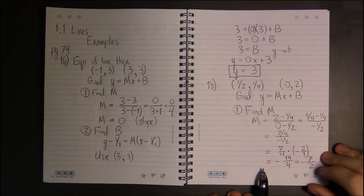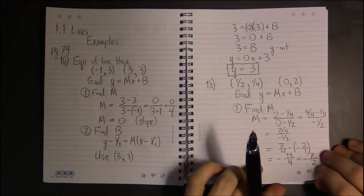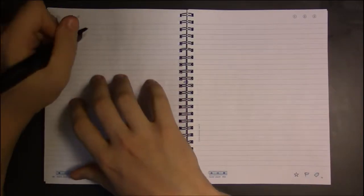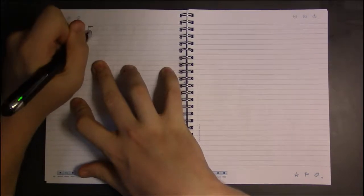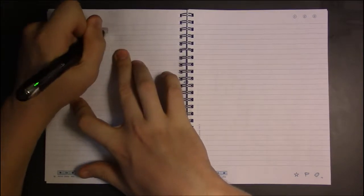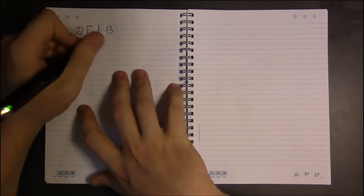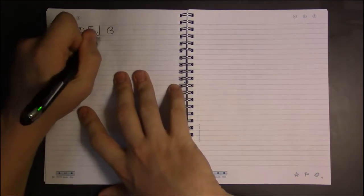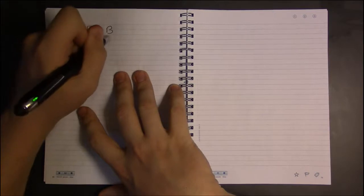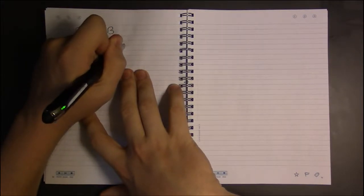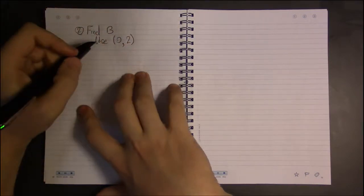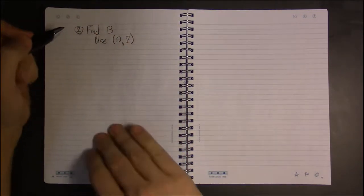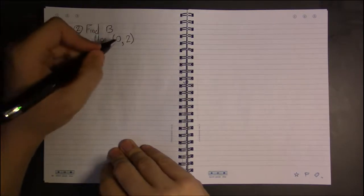So we now know what M is supposed to be: M is supposed to be -7/2. Let's see if we can find B. So step 2, halfway through this we found M, now we need to find B. So again I'm just going to plug in - if you prefer